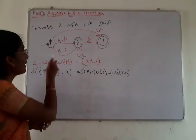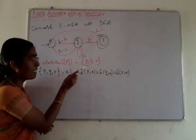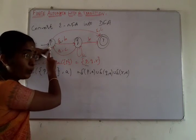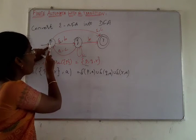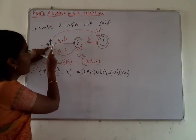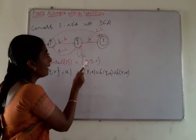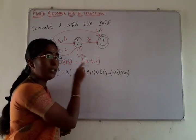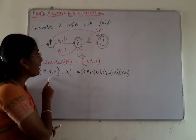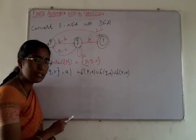Here the start state is P. So, epsilon closure of P: first include state P. Next, the epsilon transitions out of P — from P we are moving to state Q and also to state R for the epsilon transition. So we include states Q and R in the epsilon closure of P. Next, we have to extend the state PQR for the three input symbols A, B, and C.